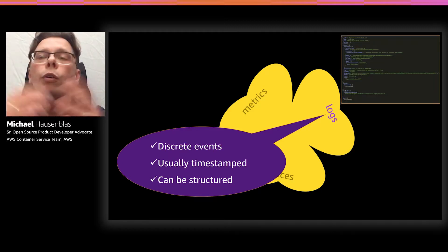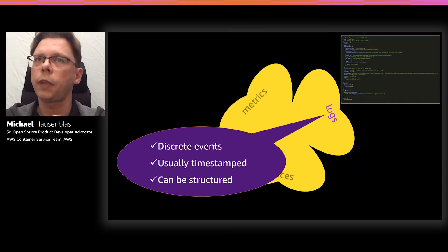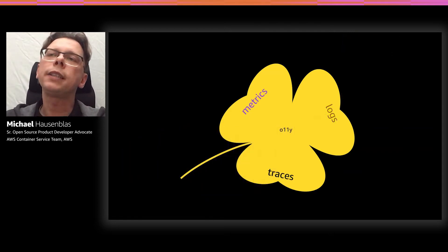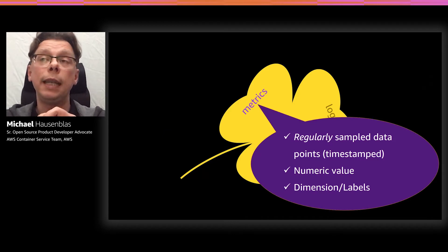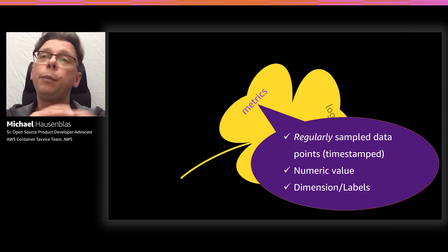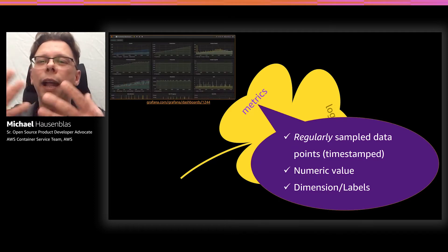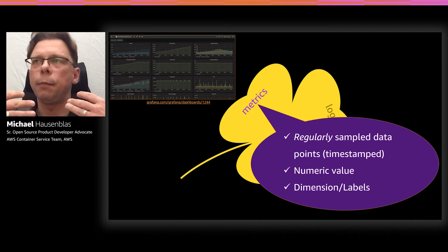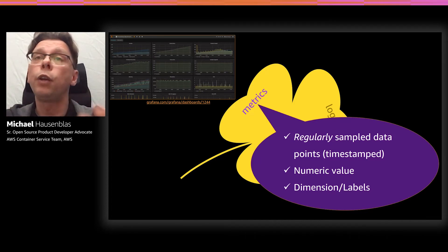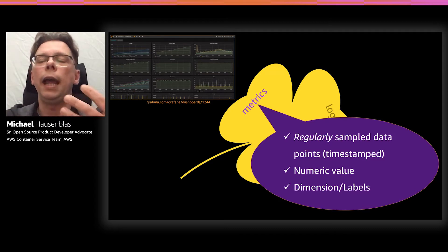Here is an example I took from a Kubernetes cluster. Moving on to metrics: metrics are regularly sampled data points. They are timestamped — that's a hard requirement. They have a numeric value and typically one or more dimensions and/or labels. Think of metrics as giving you an idea of the health or how your system is doing — for example, the number of processed requests per second, CPU utilization, or similar things showing trends and rates.